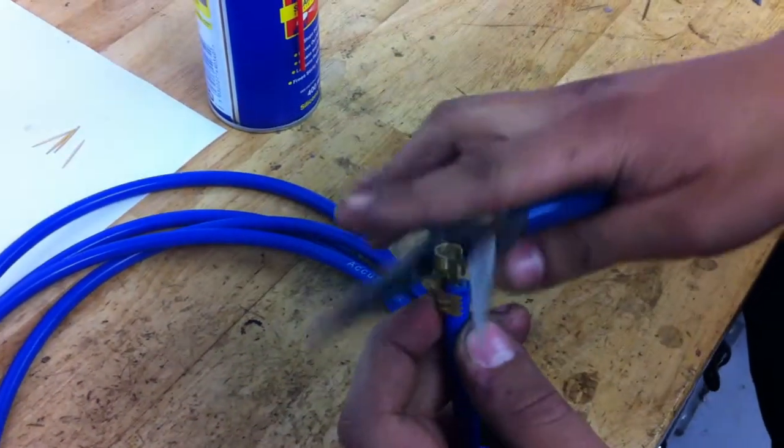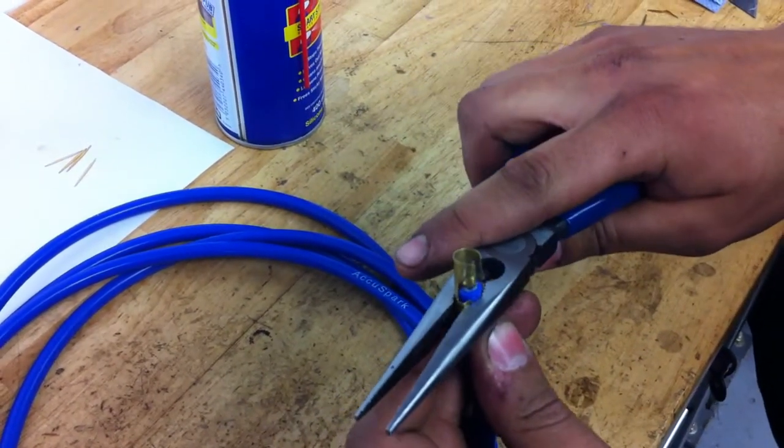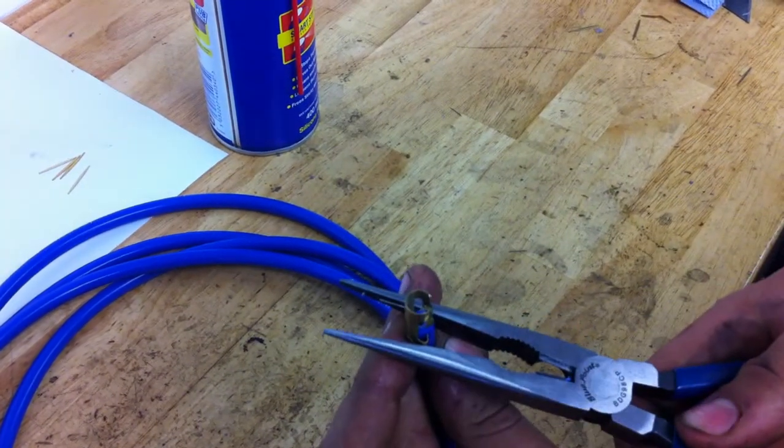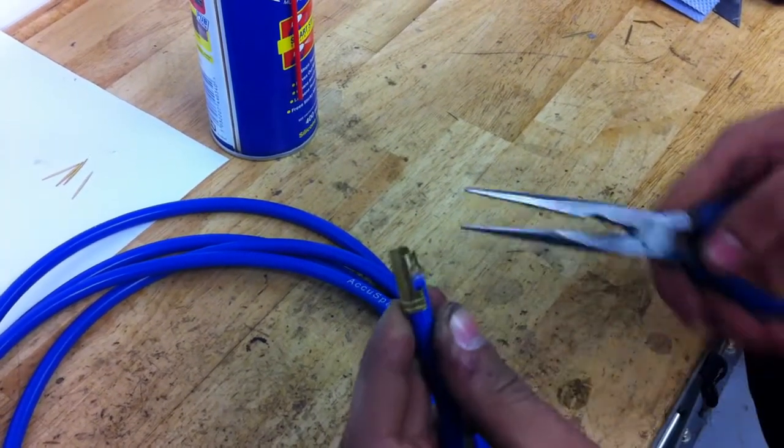Put the contact on and we can just crimp that up carefully with a pair of normal long nose pliers. Just do it one way then the other to get a good contact.